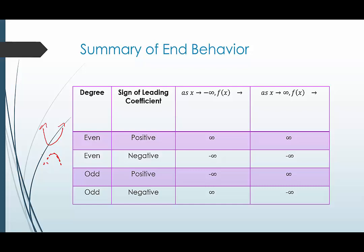The simplest odd positive would be a straight line, like y equals x, which goes up to the right and down to the left. And y equals negative x would be the most basic odd-degreed negative leading coefficient function, which would look like the opposite.